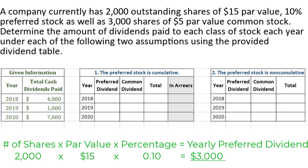Now let's look at the first case, when the preferred stock is cumulative. If the preferred stock is cumulative, we have to keep track of any missed dividends, and that's why we have a column here for dividends in arrears. In 2018, there were $4,000 in dividends paid. Since the preferred dividend is only $3,000, the preferred shareholders are going to get $3,000, and the $1,000 left over will be paid to common stock. The total is $4,000. There is $0 in arrears because all of the preferred dividend was paid this year.